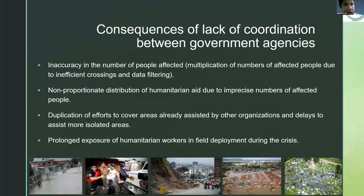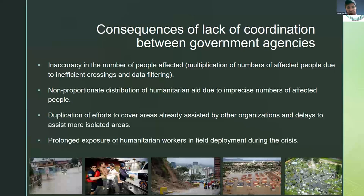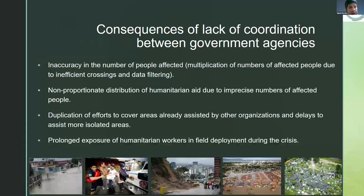There was inaccuracy in the number of people affected, which caused a multiplication of numbers due to inefficient data crossing and filtering. This happened because political and media pressure pushed authorities to accelerate the collection and processing of data about the magnitude of the affected population. There was also non-proportionate distribution of humanitarian aid — many families received the same items from different organisations, exhausting resources. There was duplication of efforts to cover areas already assisted by other organisations, and delays in assisting more isolated areas.